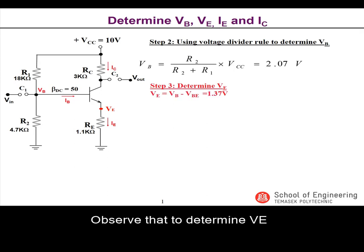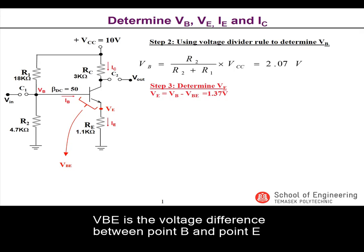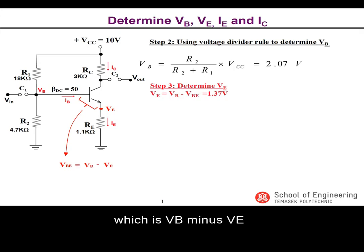Observe that to determine VE, VE is the difference between VB and VBE. VBE is the voltage difference between point B and point E, which is VB minus VE.